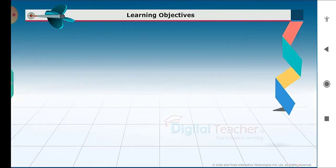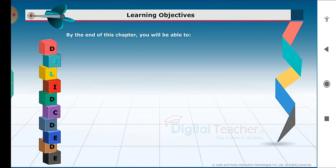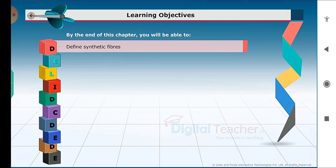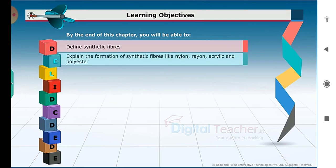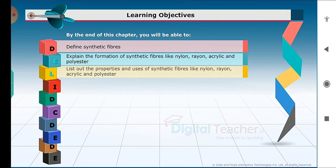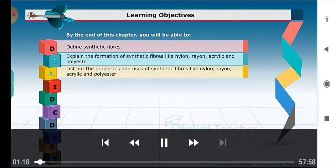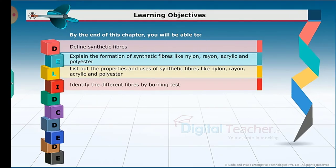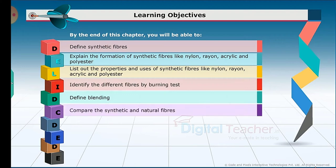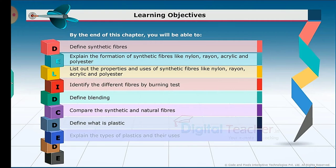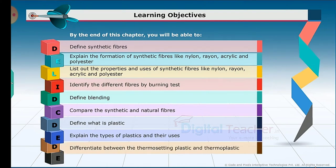By the end of this chapter, you will be able to define synthetic fibers, explain the formation of synthetic fibers like nylon, rayon, acrylic and polyester, list out the properties and uses of synthetic fibers, identify the different fibers by burning test, define blending, compare synthetic and natural fibers, define plastic, explain the types of plastics and their uses, and differentiate between thermosetting plastic and thermoplastic.